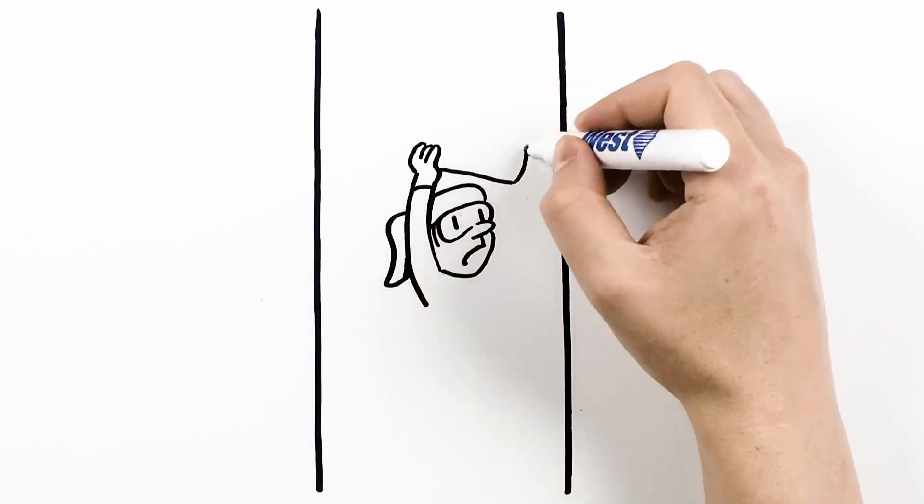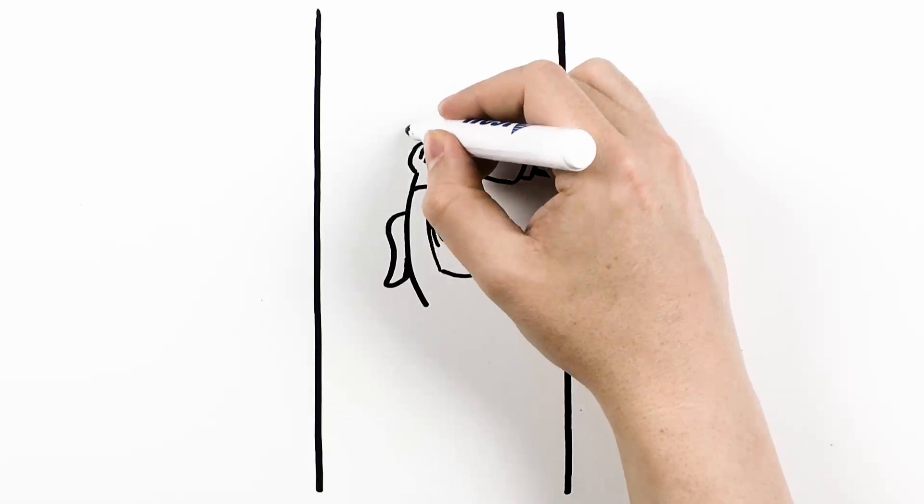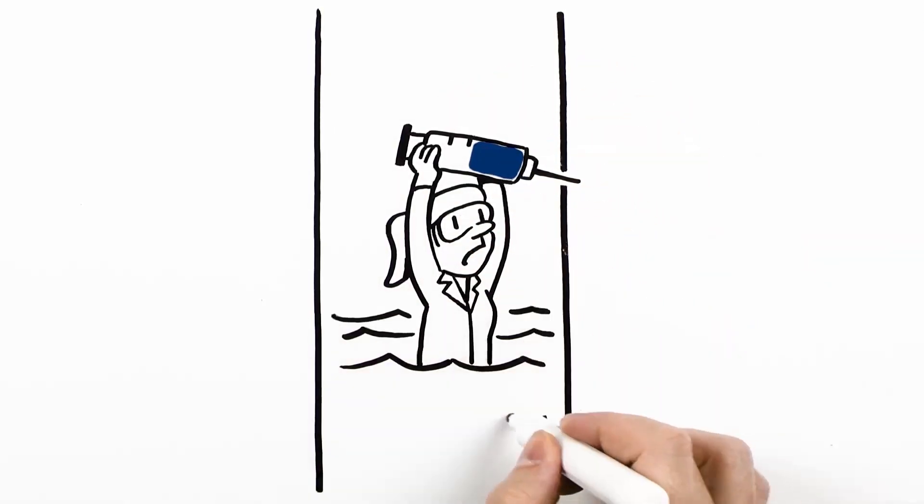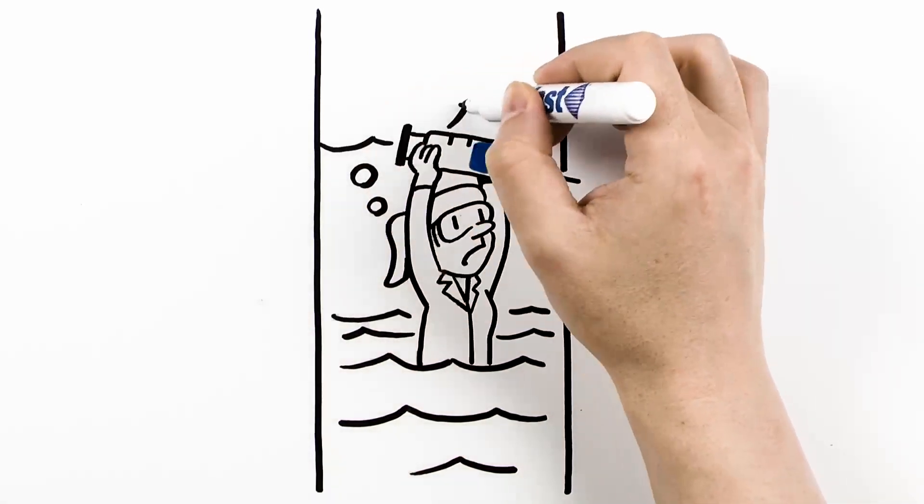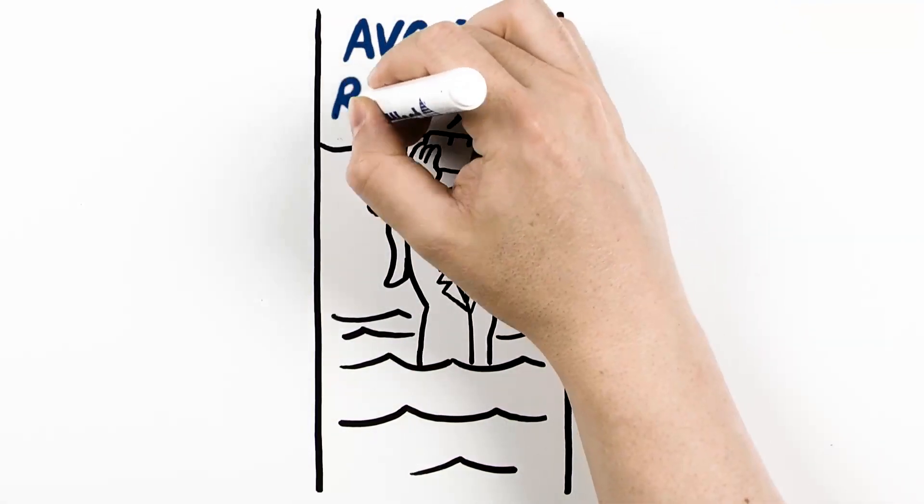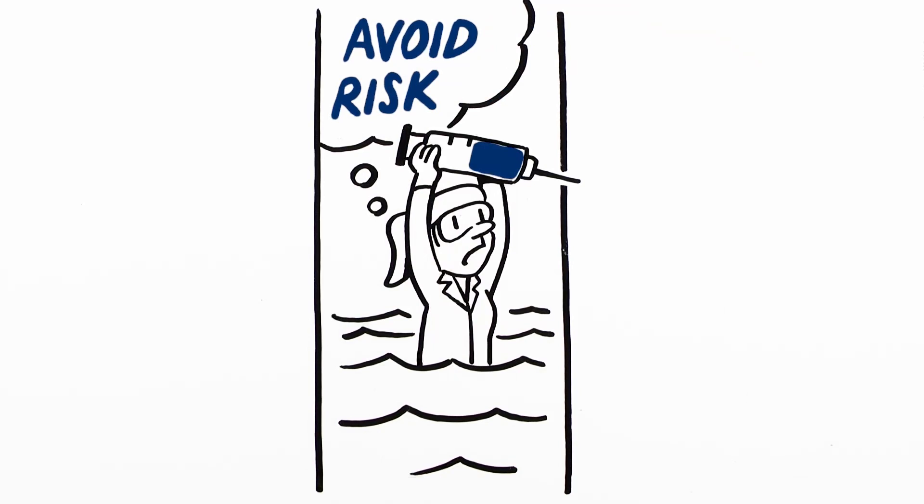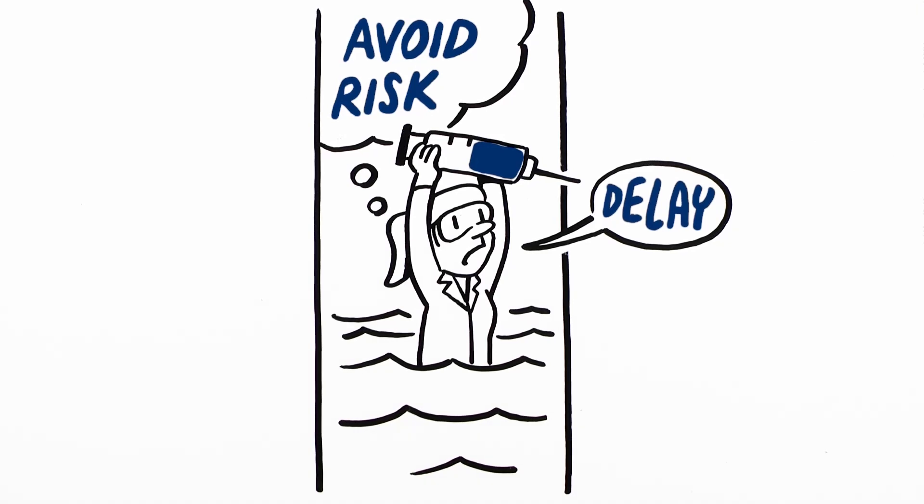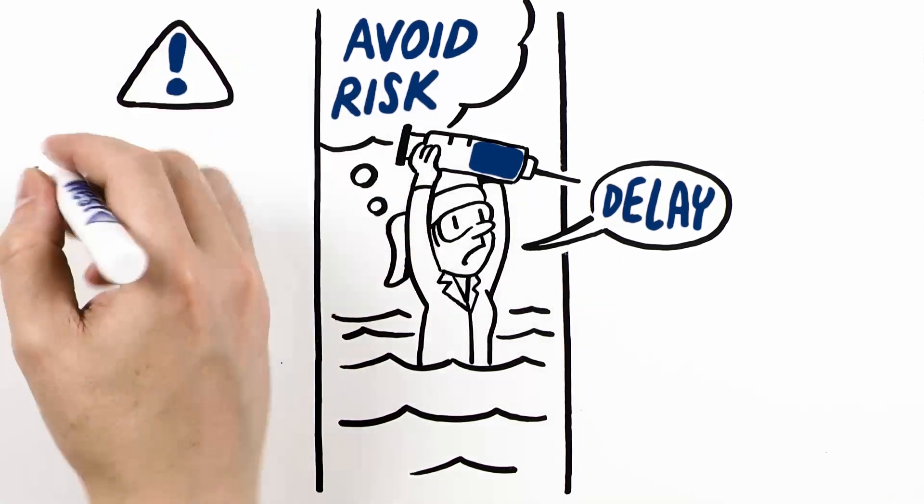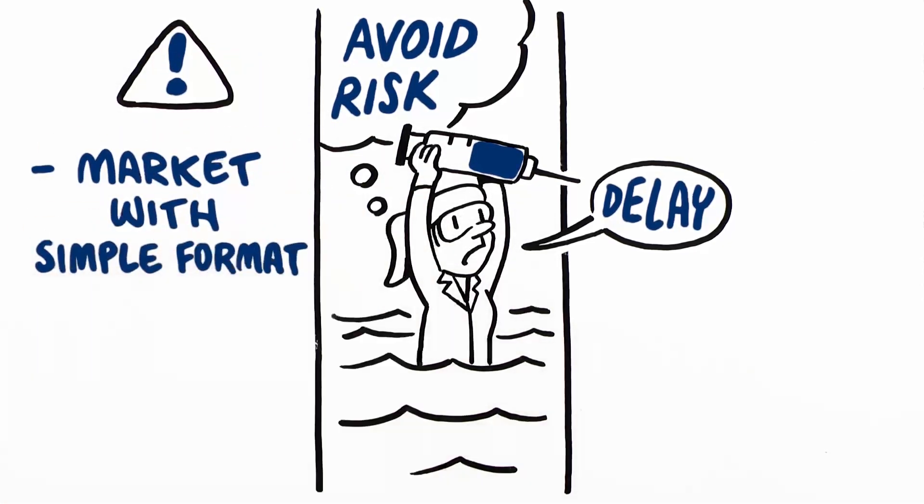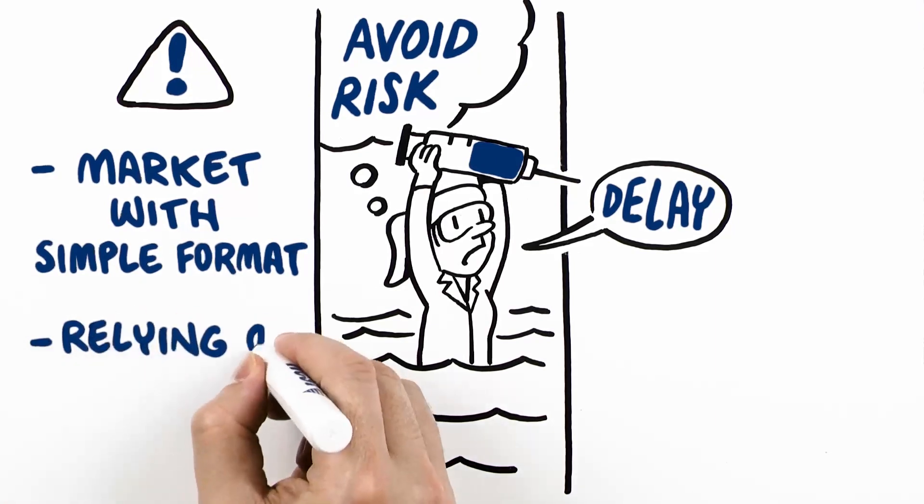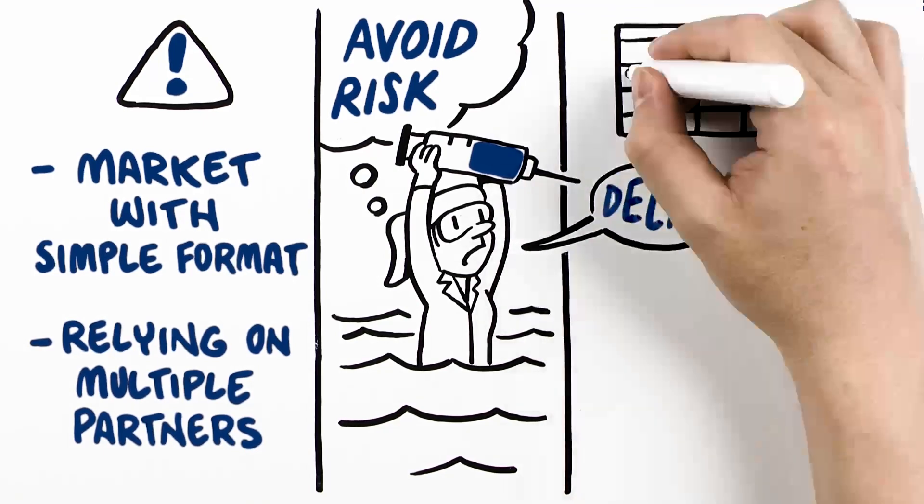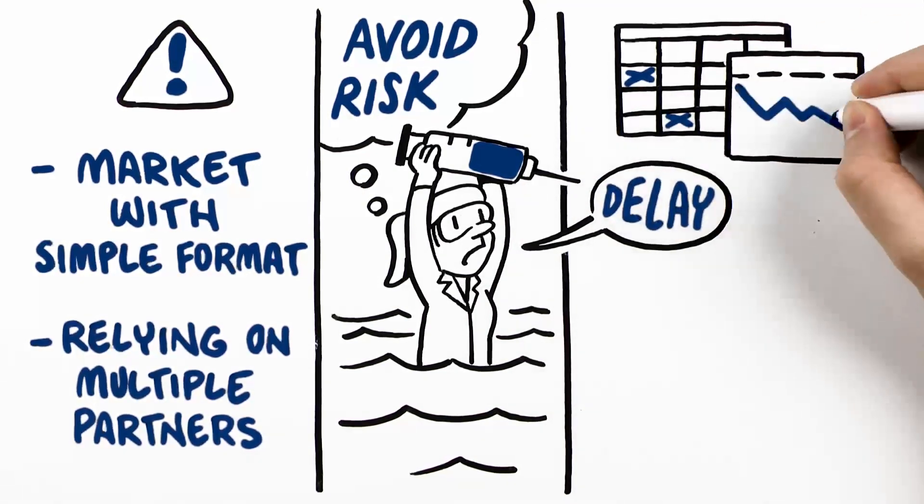Many companies understandably want to avoid introducing risk as they transition to combination products. Because there's a lot of uncertainty around drug delivery systems, companies are taking overly cautious steps, such as delaying combination product and device considerations until later phases, going to market with a simple delivery format, or relying on the expertise of multiple outsourcing partners.